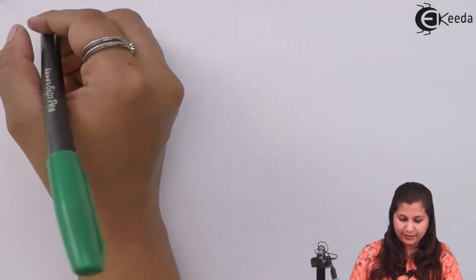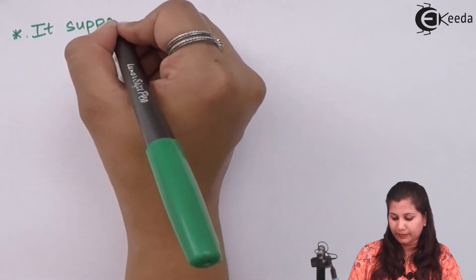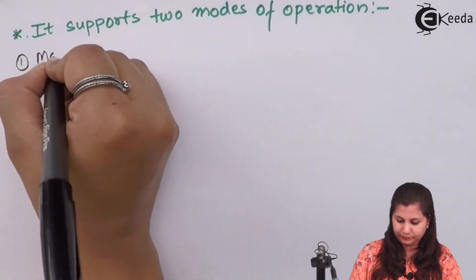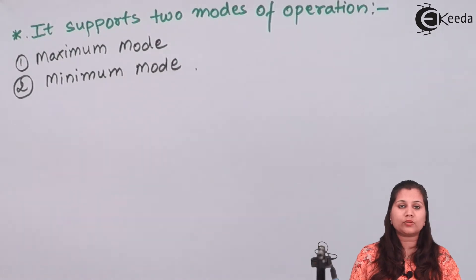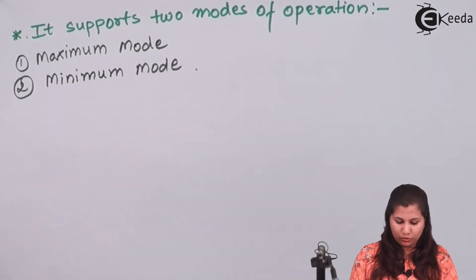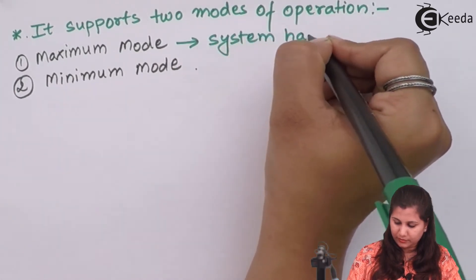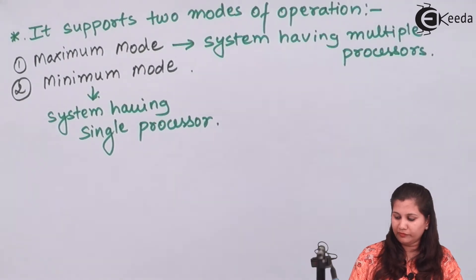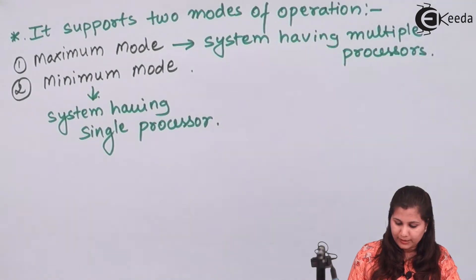Another feature of the 8086 is that it supports two modes of operation: maximum mode and minimum mode. Maximum mode is suitable for multiprocessor systems — systems having multiple processors — whereas minimum mode is suitable for a system having a single processor only.